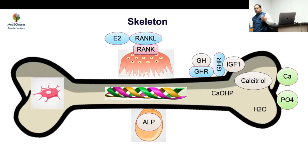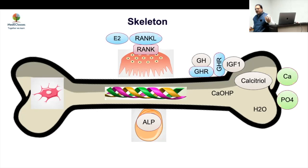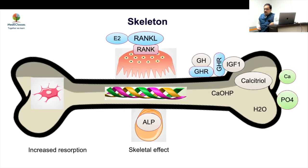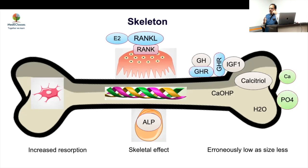Bone health is also affected, with multiple contributing factors. The most important is estrogen deficiency — with less estrogen, RANK ligand is elevated, osteoclast activity increases, and bone mass decreases. There is also a direct skeletal effect. Because body size is smaller in Turner syndrome, the severity of bone abnormalities may be disproportionately overestimated. Therefore, DEXA should not be done routinely until after estrogen replacement is completed.